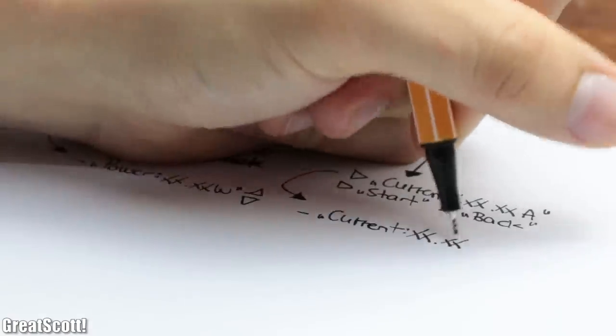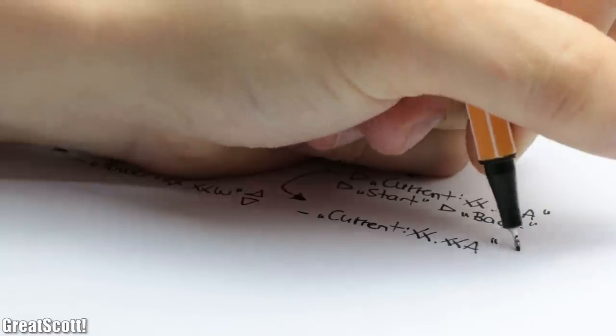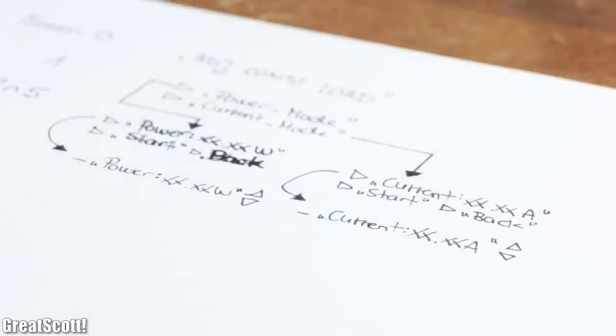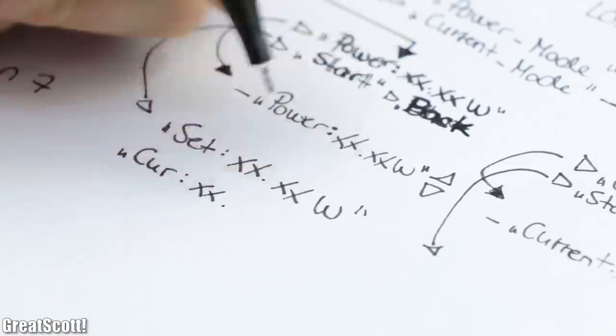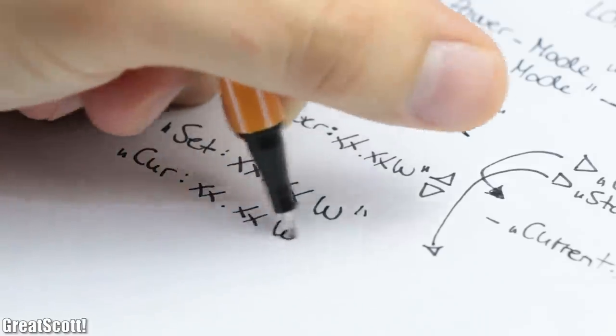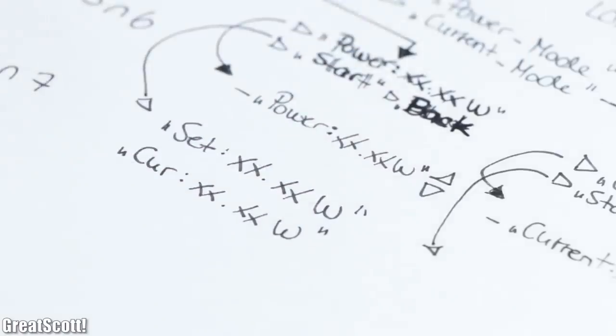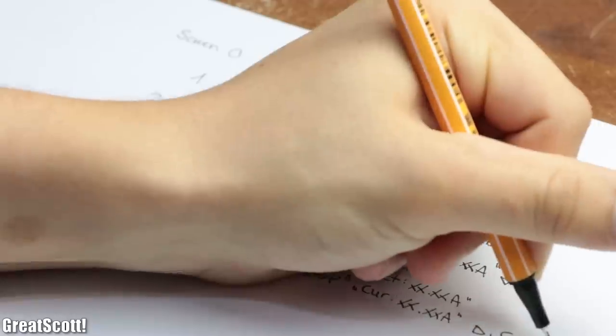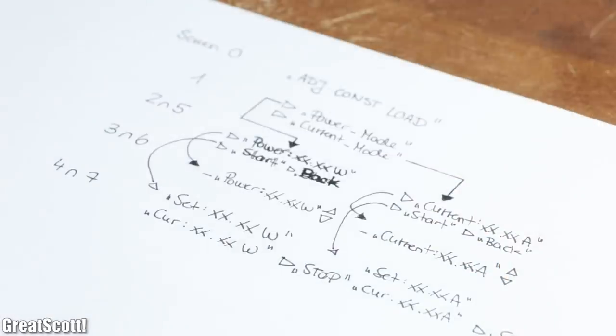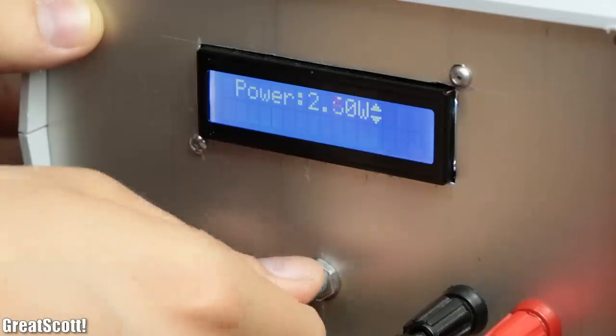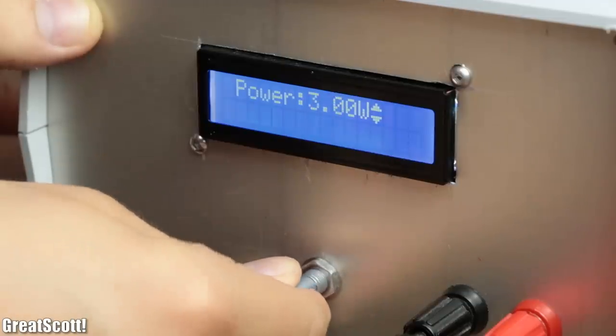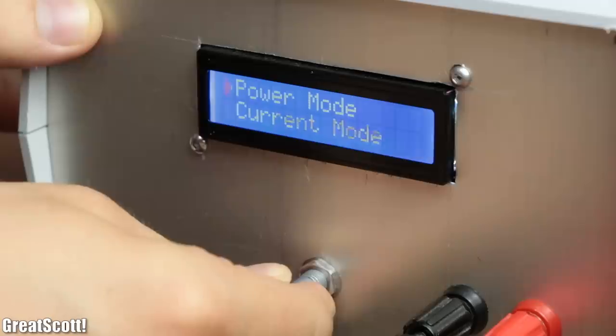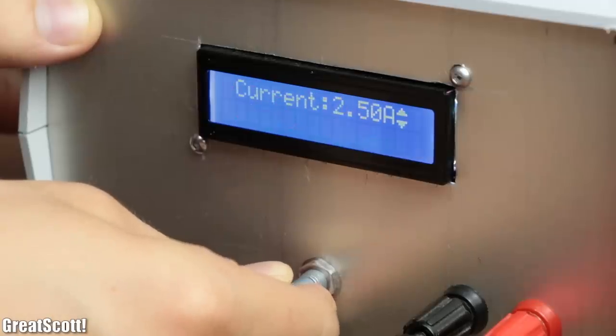When choosing to adjust the power or current you can then obviously adjust those values. And if you choose start you can see the set value and the currently measured value. Of course, there's also a stop button there. All those 8 screens basically make up the whole system. And let me tell you that after using this piece of equipment for quite a while, I think this menu creation was the right choice.